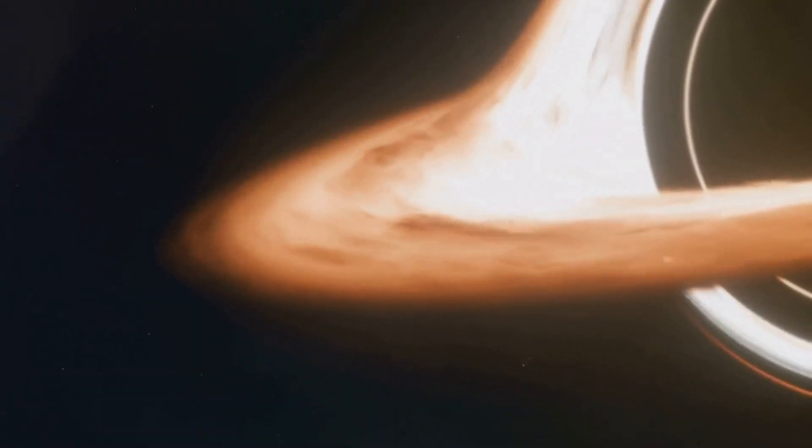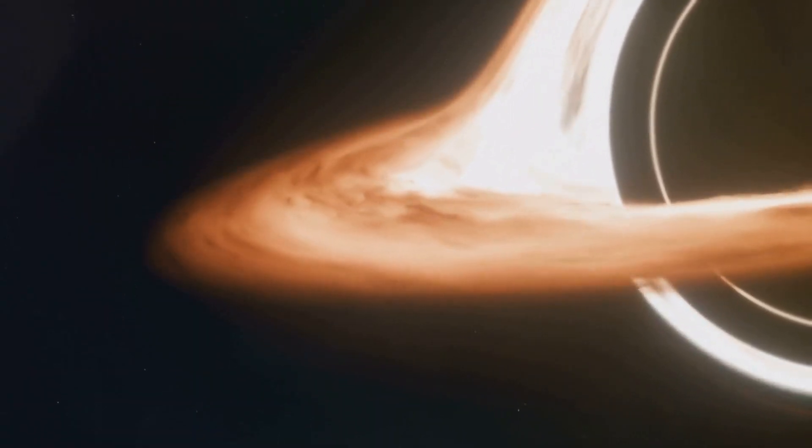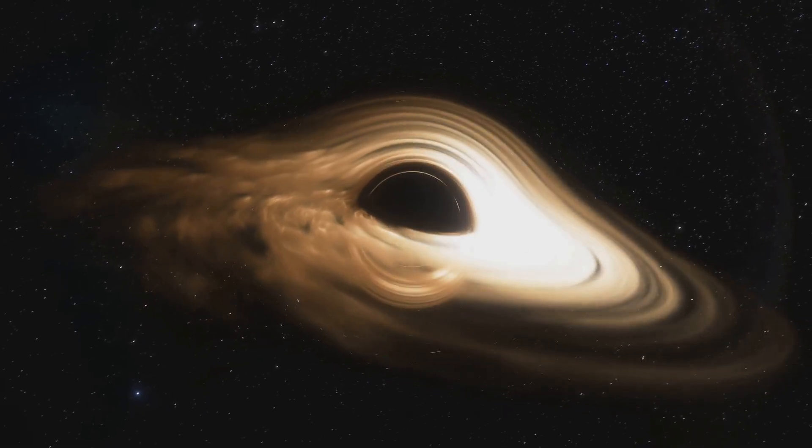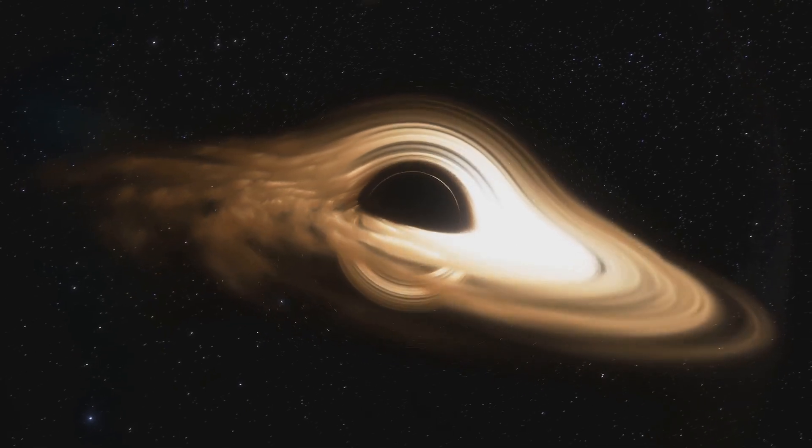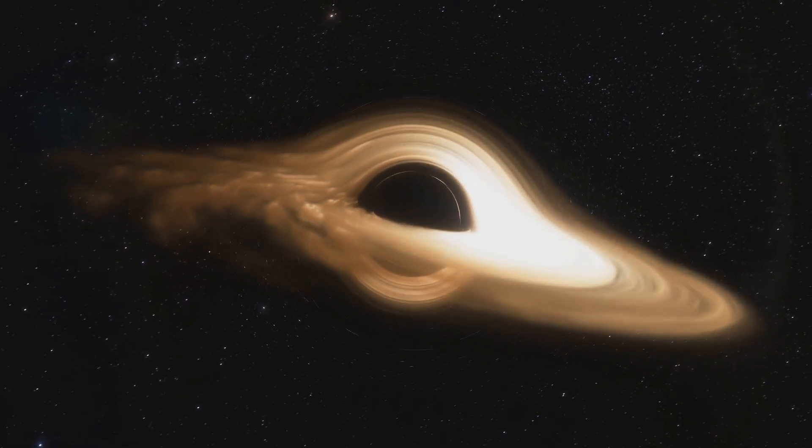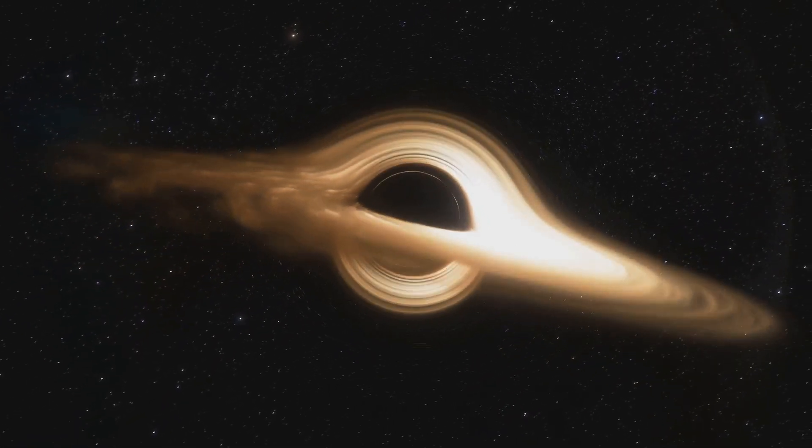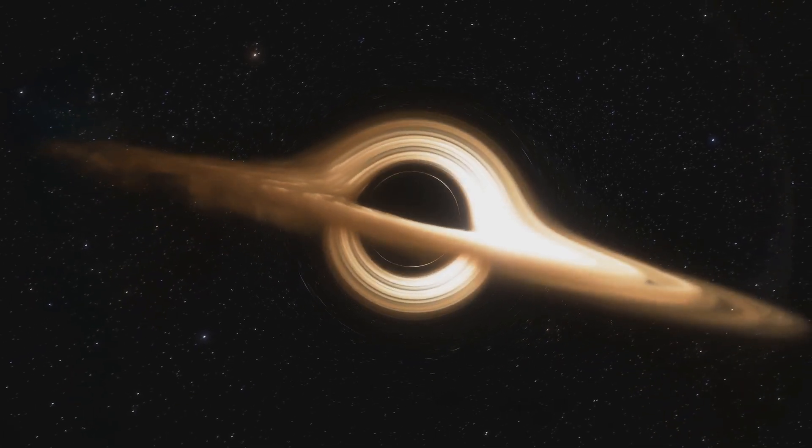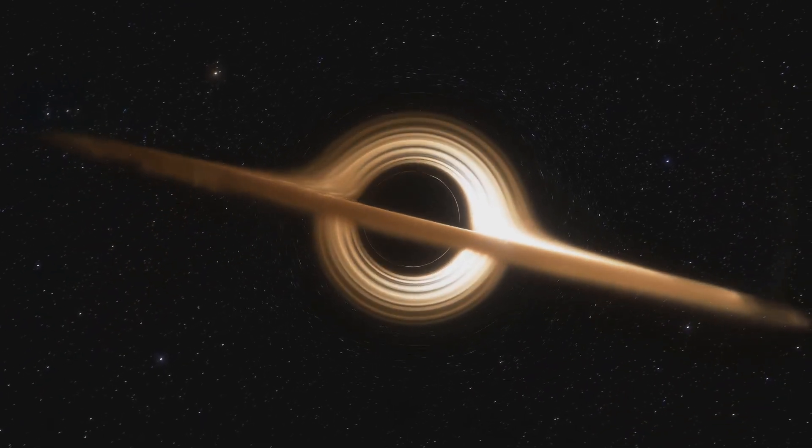Even light, which has no mass, follows the contours of this warped fabric. This phenomenon, known as gravitational lensing, has been observed numerous times, with light from distant galaxies bending around massive objects, creating distorted and magnified images.